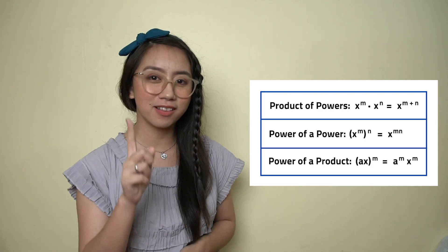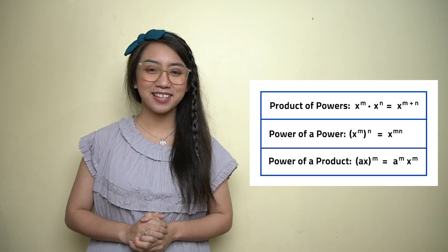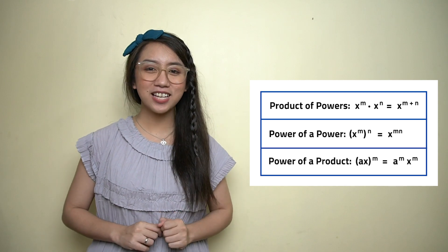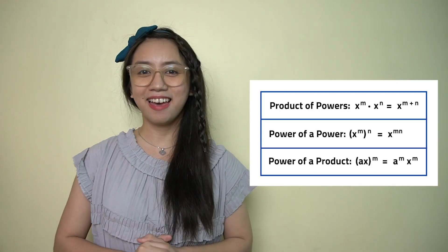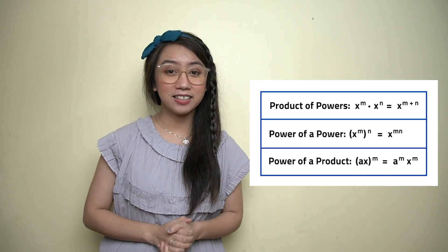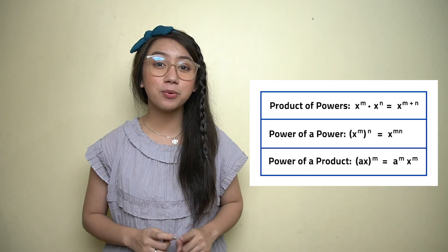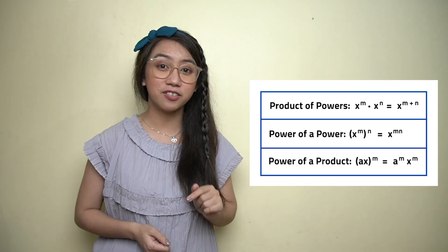Since we already know polynomials, we can now try solving multiplication problems involving them. In multiplying polynomials, we need to remember the laws of exponents. The product of powers states that when we multiply powers of the same base, we add the exponents: x raised to m times x raised to n is equal to x raised to m plus n. In power of a power, we multiply the powers: x raised to m raised to n is equal to x raised to mn. And the power of a product states that a term with two or more factors raised to a power is equal to the product of its factors raised to the same power: ax raised to the power of m is equal to a raised to m times x raised to m.